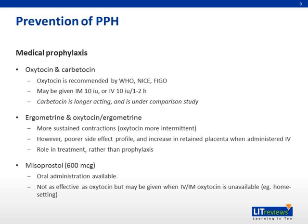For medical prophylaxis, our first type is oxytocin and carbetocin. Oxytocin is recommended by WHO and FIGO. It may be given intramuscularly in 10 units or intravenously, 10 units over one to two hours. Carbetocin is a longer-acting form of prophylaxis and is now under comparison study. The second type of prophylaxis is ergometrine and oxytocin plus ergometrine. Ergometrine gives more sustained contractions compared to oxytocin, which is more intermittent. However, it has a poorer side effect profile, such as increased hypertension, vomiting, and nausea, and there is increased retained placenta when administered intravenously.